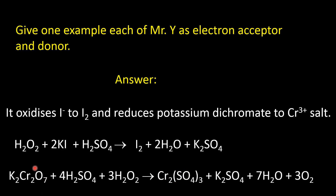So chromium is reduced from the plus 6 state to the plus 3 state. In hydrogen peroxide, oxygen is in the minus 1 oxidation state, which is oxidized to elemental oxygen in the 0 oxidation state.